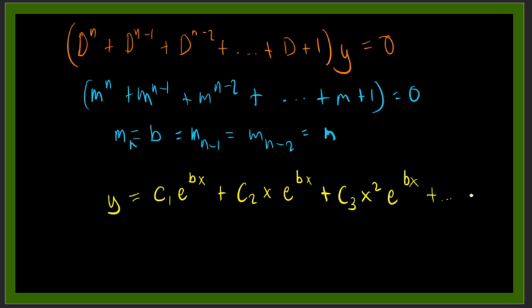Plus C_n x^(n-1)e^(bx). So that is the general solution for auxiliary equation with repeated roots.